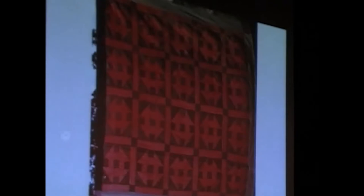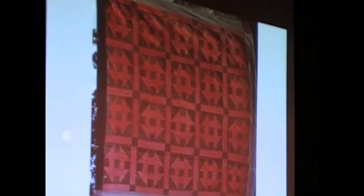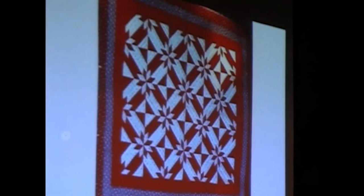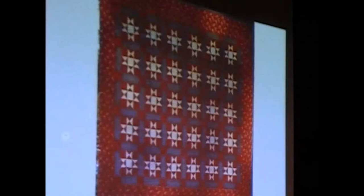A quilt like this is wool, it's all wool. It has many names: hole in the barn door, churn dash, monkey wrench. Many star quilts. This was stars in the milky way, rolling star, variable star.